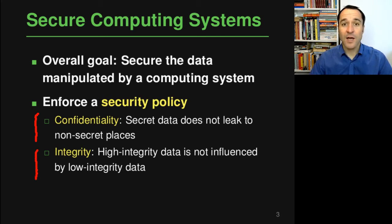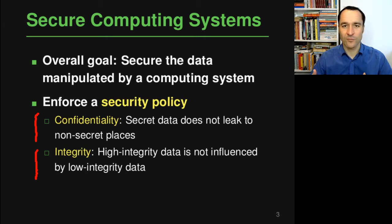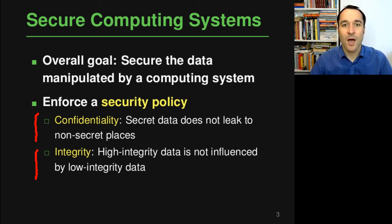Confidentiality means that we have some kind of secret data — for example, a password — that should not leak to some non-secret place, such as an output that someone not supposed to see the password could see. The inverse property is integrity, where you have some high integrity data that should not be influenced by some low integrity data. You want to check using information flow analysis if a violation of your security policy is possible.